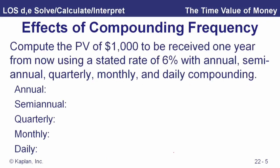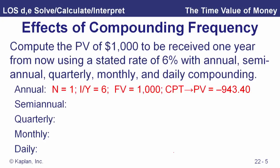Here's another example: compute the present value of $1,000 to be received one year from now using a stated rate of six percent with annual, semi-annual, quarterly, monthly, and daily compounding. With more frequent compounding, the effective discount rate over the year is higher and we get smaller present values. The present value is $943.40 with six percent annual compounding.